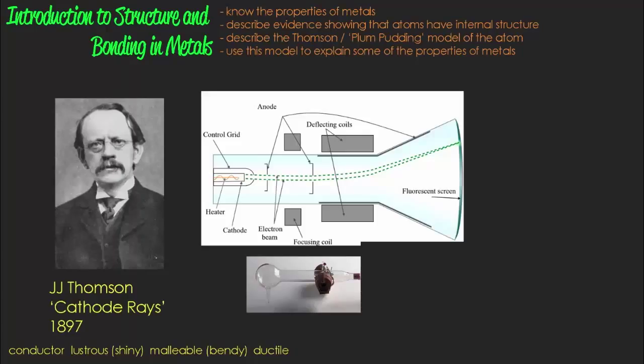So one of the first insights that we had that the atom had some internal structure was from an experiment done by JJ Thompson in 1897 and he was working with a piece of equipment that allowed him to heat up a piece of metal that was in a glass piece of apparatus under low pressure. So there was very little air in there to interfere with the experiment, a little bit like an old-fashioned light bulb.